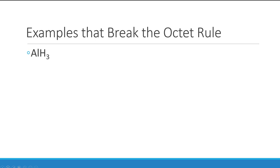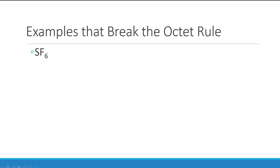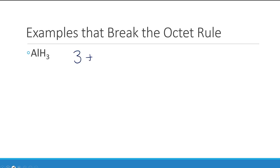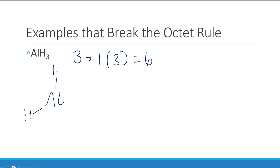First we have an example with aluminum: AlH₃. We'll count our valence electrons — three from the aluminum and one from each hydrogen, but there are three of them, which gives us six. We put our least electronegative element in the center and our three hydrogens around the outside. You'll see that gives us our six electrons. Aluminum doesn't have an octet, but there aren't actually even enough electrons to give it an octet, so this structure is complete.